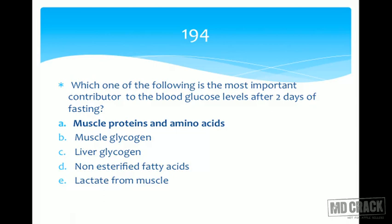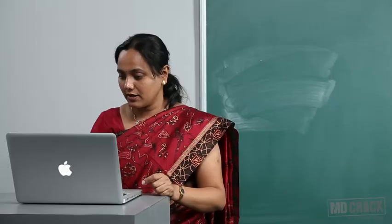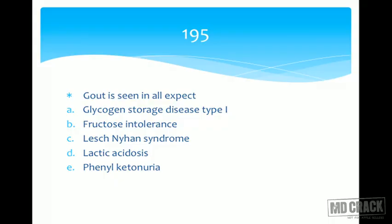Lactate from muscle is a gluconeogenic substrate, but lactate production mainly occurs during anaerobic metabolism. During fasting, the person is not exercising — oxygen supply is good — so pyruvate is not converted to lactate; instead it forms alanine, which is transported to the liver for gluconeogenesis. So the right answer is muscle proteins and amino acids.